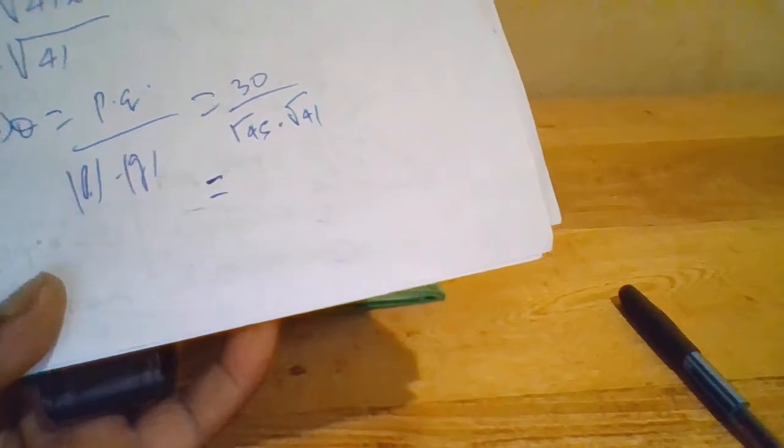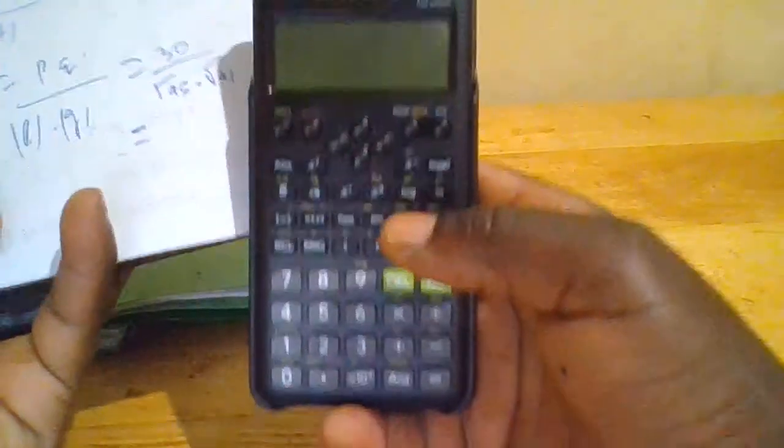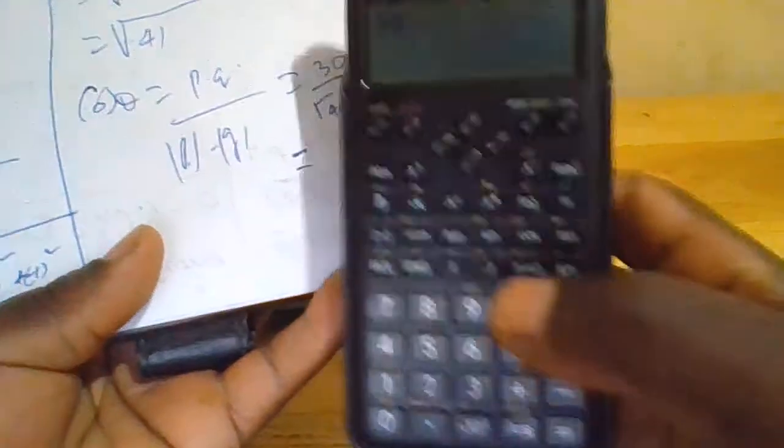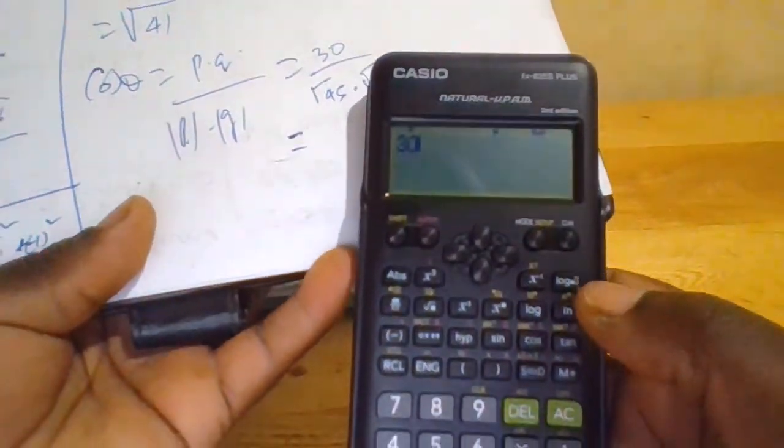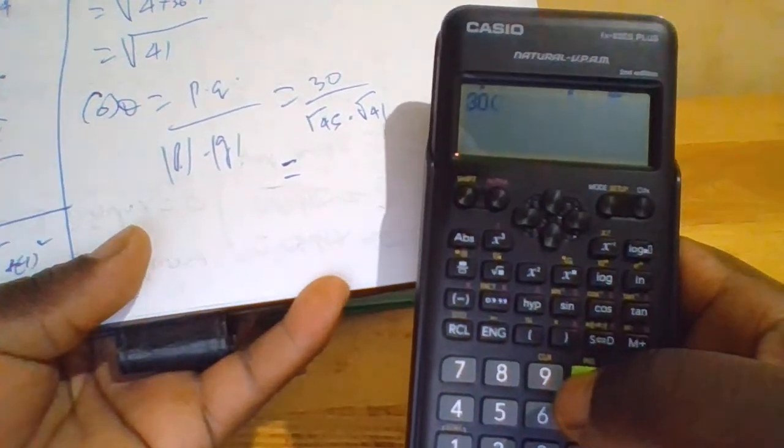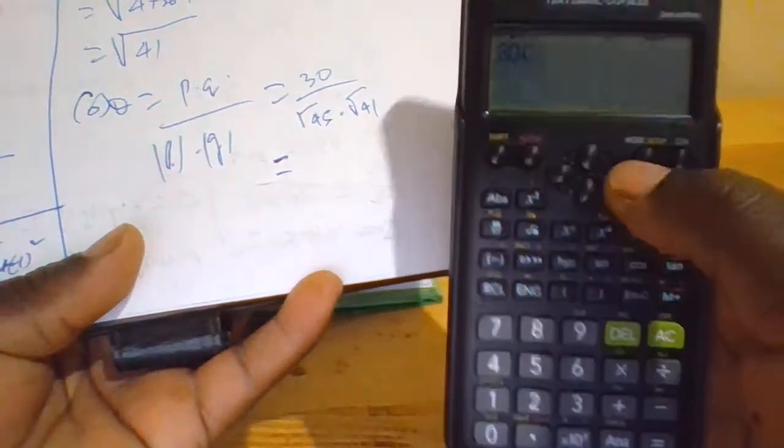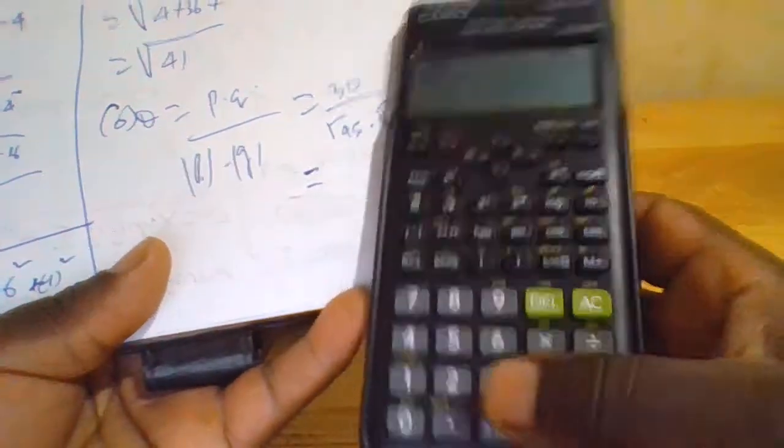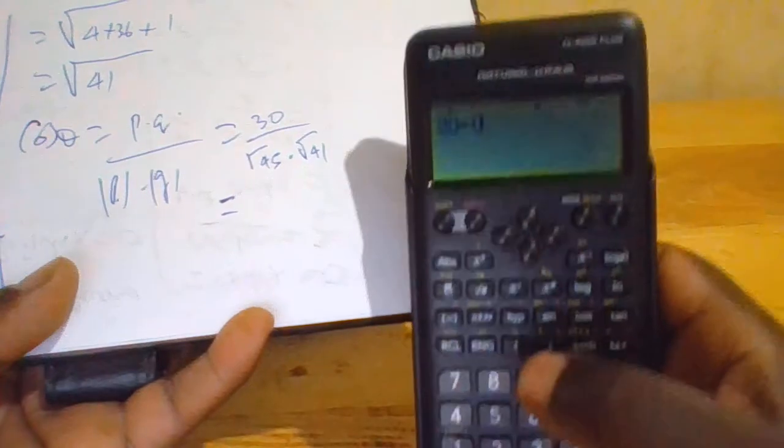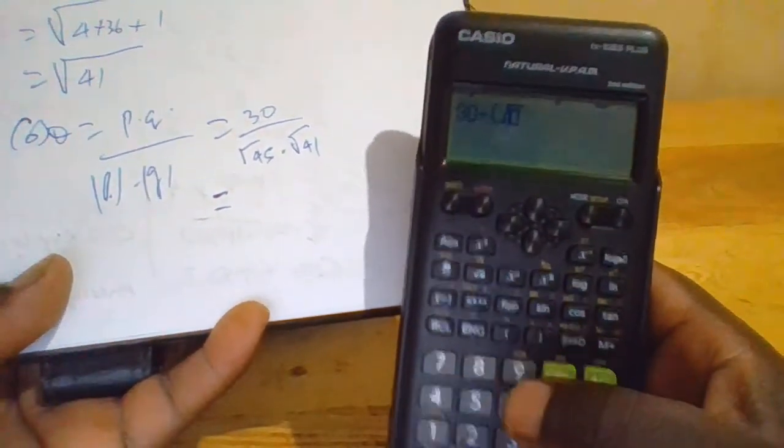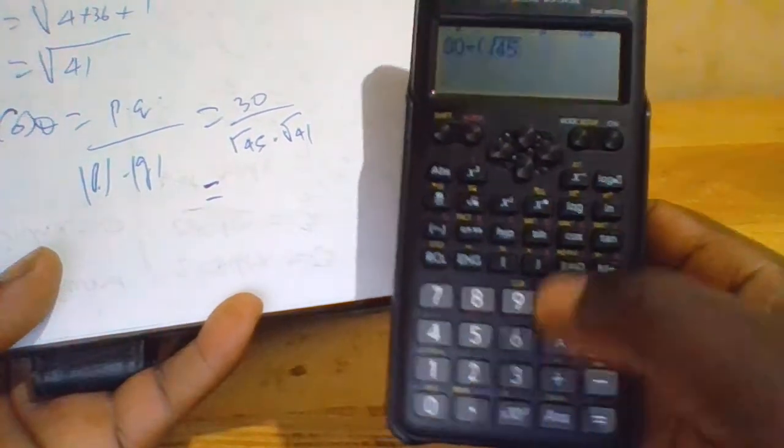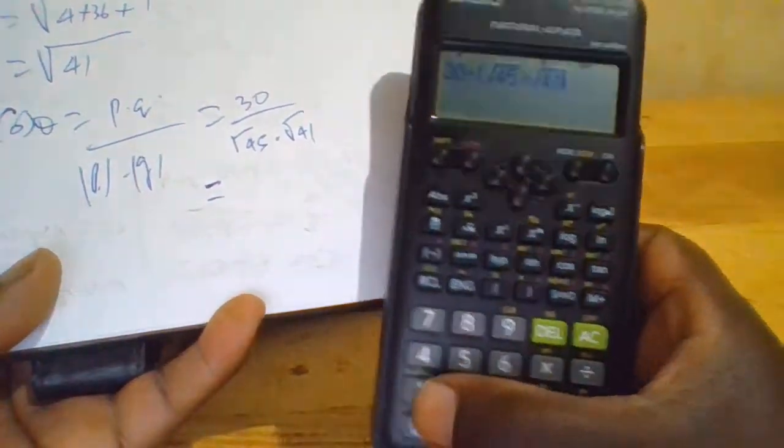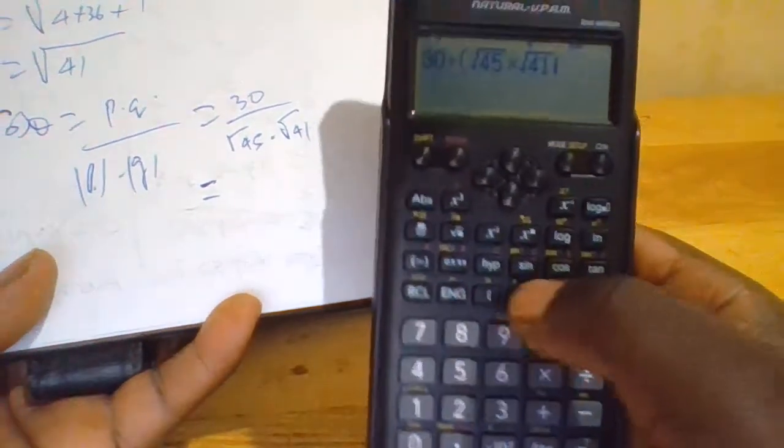We can use our calculator. We have 30 divided by open bracket root 45 times root 41, close the bracket.